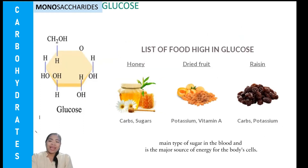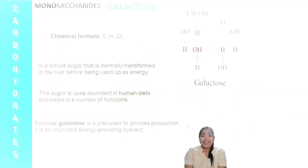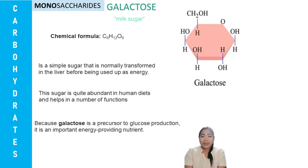Glucose is the main type of sugar in blood and is the major source of energy for the body's cells. Galactose is also known as milk sugar. It is a simple sugar that is normally transformed in the liver before being used as energy. This sugar is quite abundant in human diets and helps in a number of functions. Because galactose is a precursor to glucose production, it is an important energy-providing nutrient.